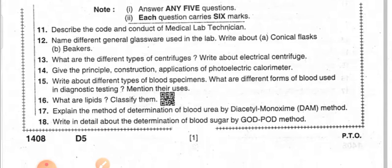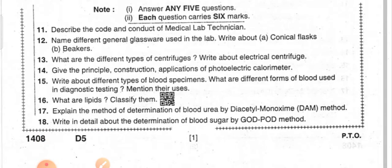Section B questions: Describe the code and conduct of a medical lab technician. Name different general glassware used in the lab — write about the conical flask and beakers. What are the different types of centrifuges? Write about the electrical centrifuge. Give the principle, construction, and applications of the photoelectric colorimeter.